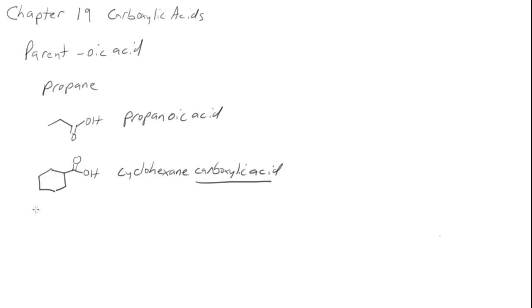The other thing that's important with carboxylic acids is there are a lot of common names and we need to at least be familiar with what the common names are. So if we go through some of the common names, if we have one carbon, this is called formic acid.